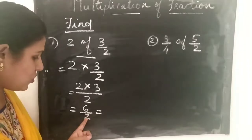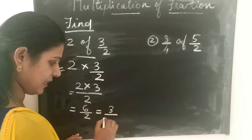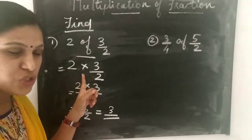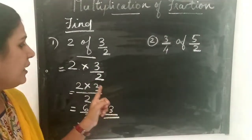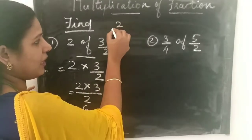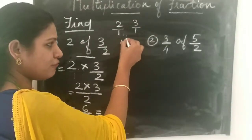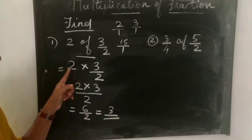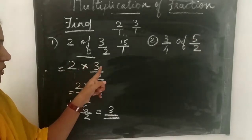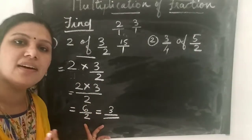And 6 by 2 is 3, since 2 threes are 6. So we get the answer as 3. That is, 2 of 3 by 2 means into, so 2 into 3 by 2. Here 2 means 2 by 1, since any whole number can be written with denominator 1. So we write 2 into 3 divided by 1 into 2, which gives 6 by 2, and 6 by 2 is 3.